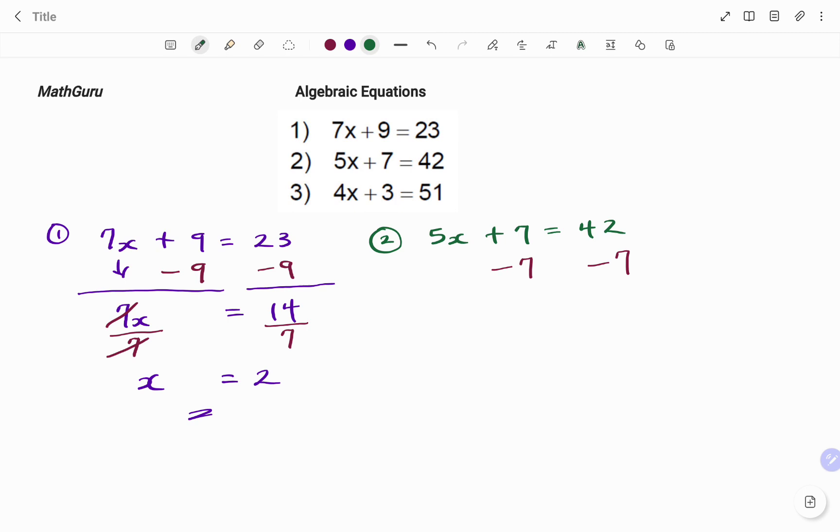So if I take out 7 from both sides, I'm still left with my 5x, and then I know that 7 minus 7 is 0, so I leave the space empty. Equals, if I go to the right-hand side, 42 minus 7 is 35.